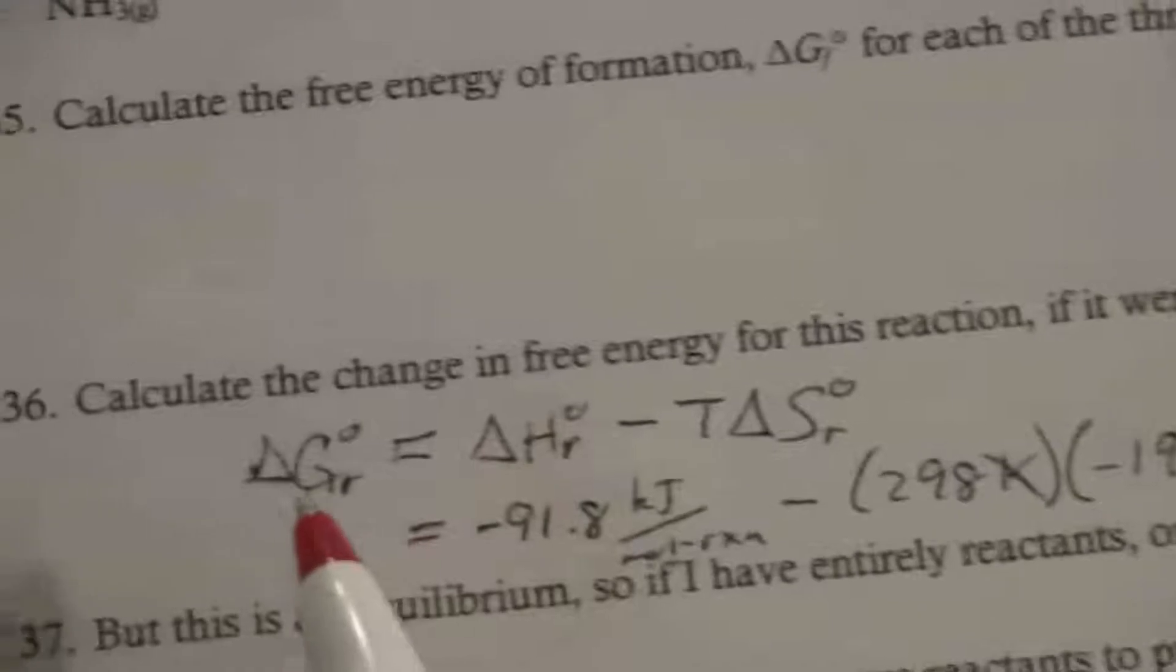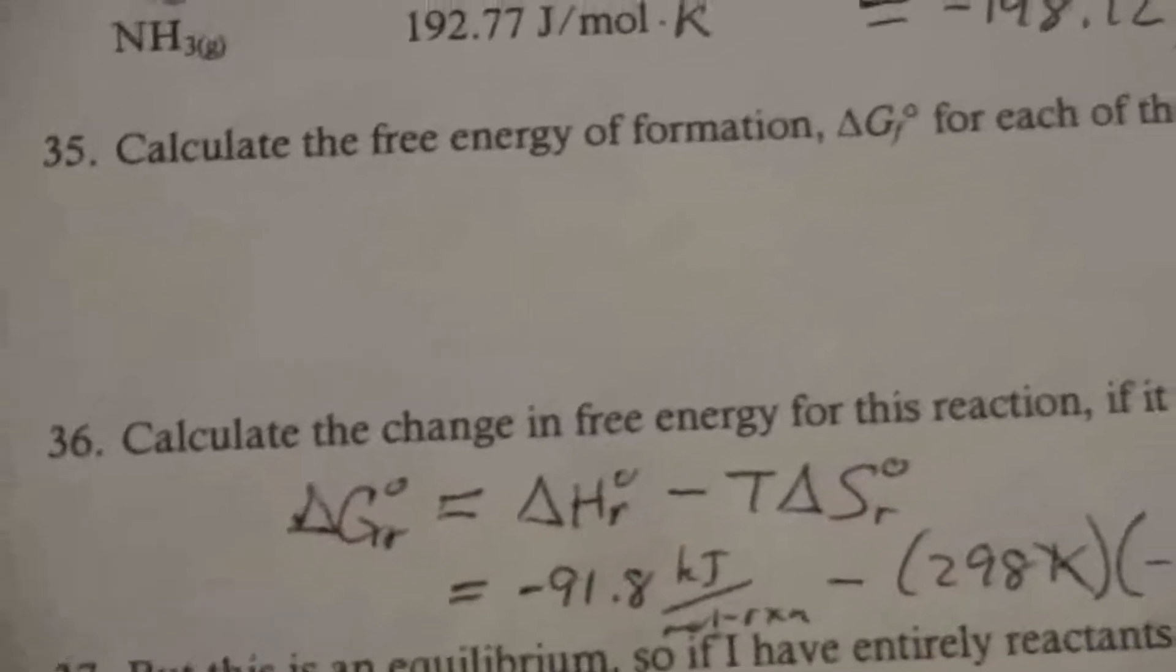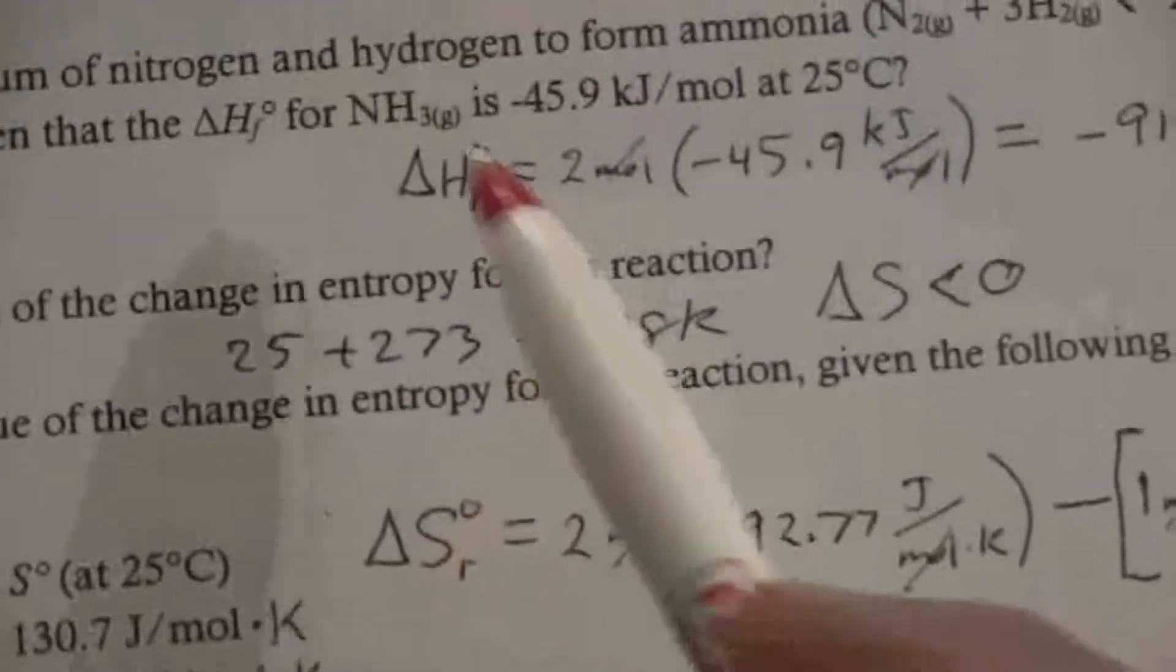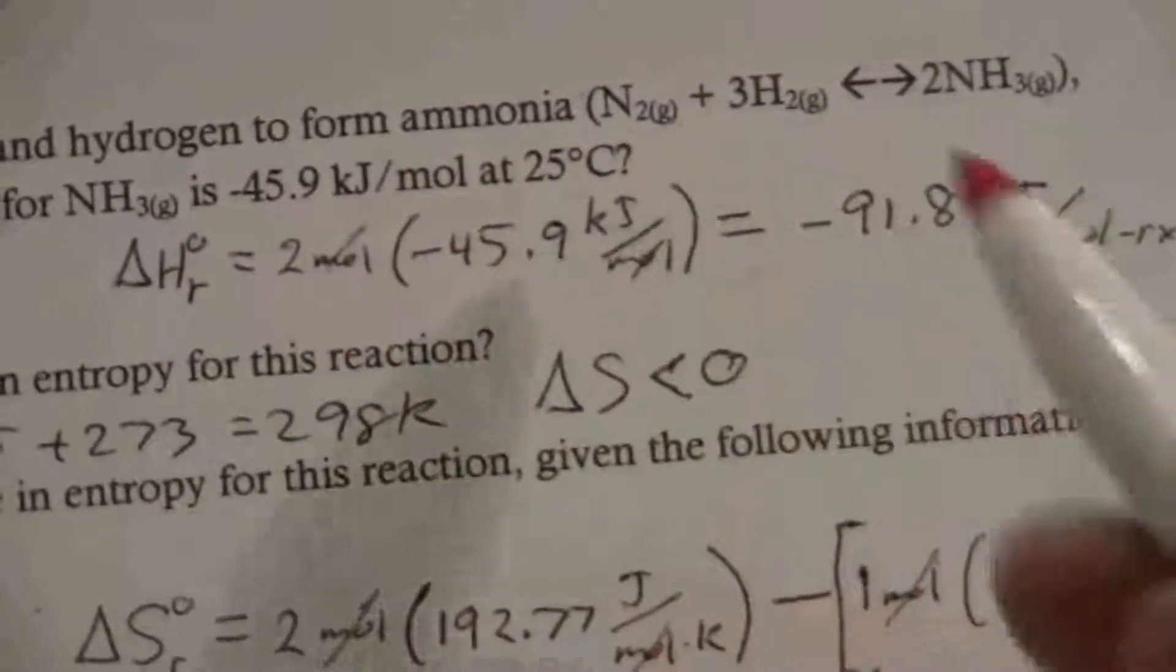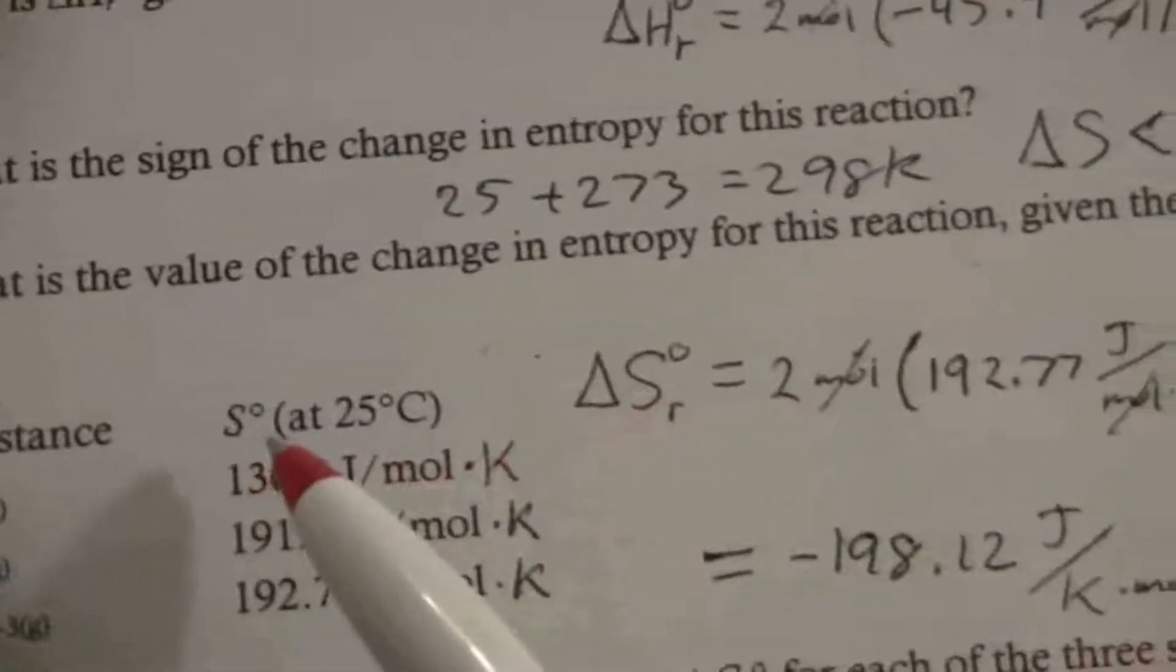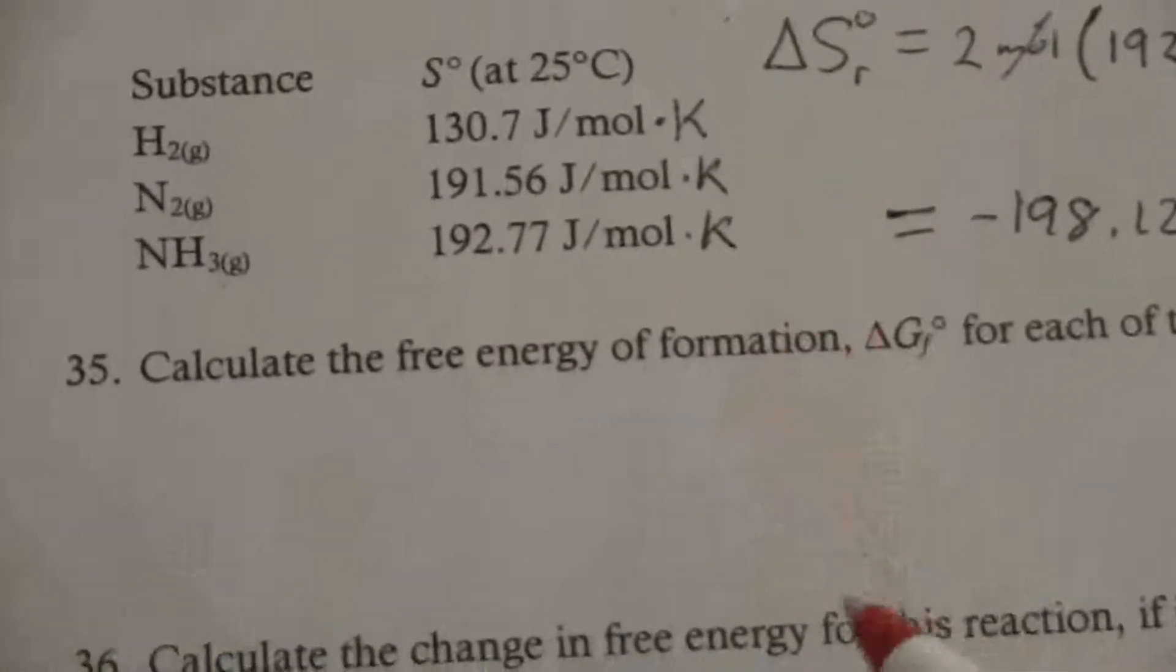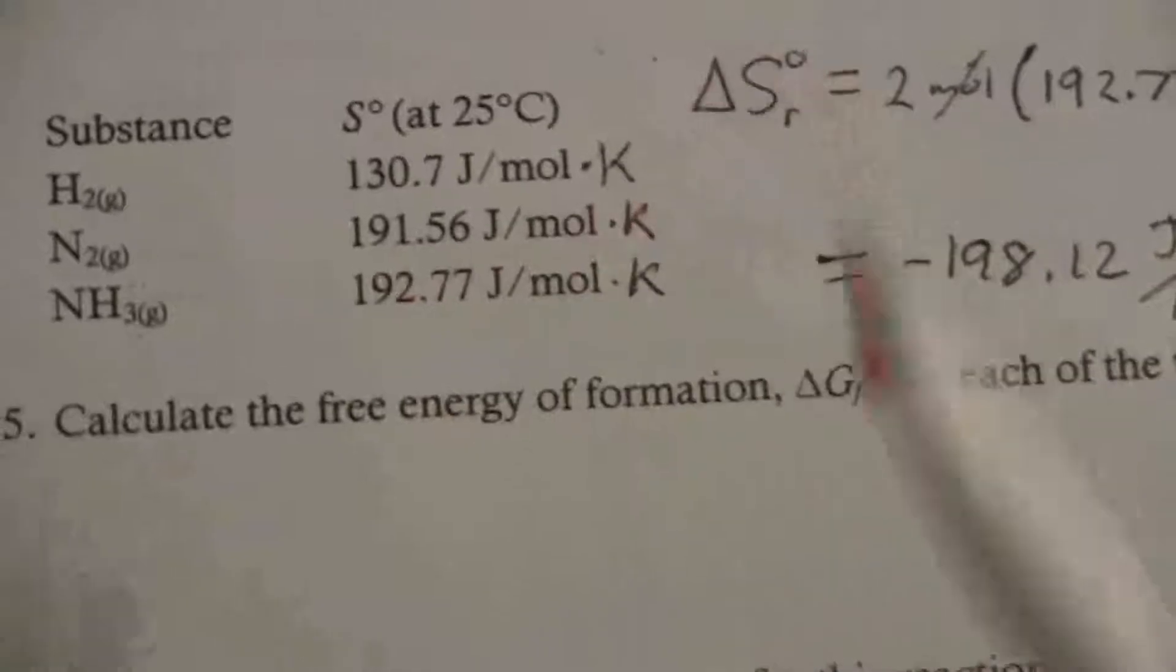So that is one way to calculate the delta G for the reaction. However, we can also calculate the delta G of the reaction in the same way that we did for the delta S and the delta H. We can take the delta G of formation for the products and the reactants.